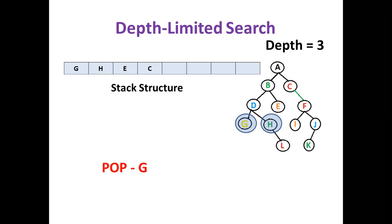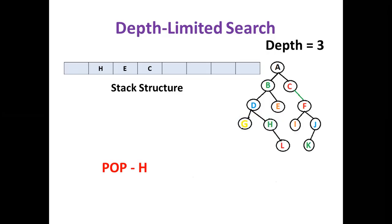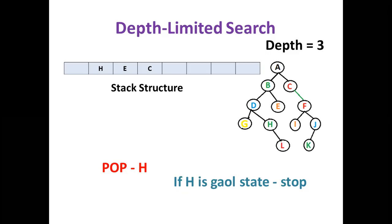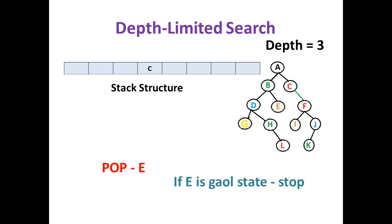G is popped out. G has no children. If G is the goal state, stop; otherwise pop H. If H is the goal state, stop. The children of H include L, but L's depth exceeds the predefined limit, so it cannot be added. Next, E is popped; if E is the goal state, stop, otherwise repeat the procedure. C is then popped, and its child F has depth 2, so F is added to the stack.